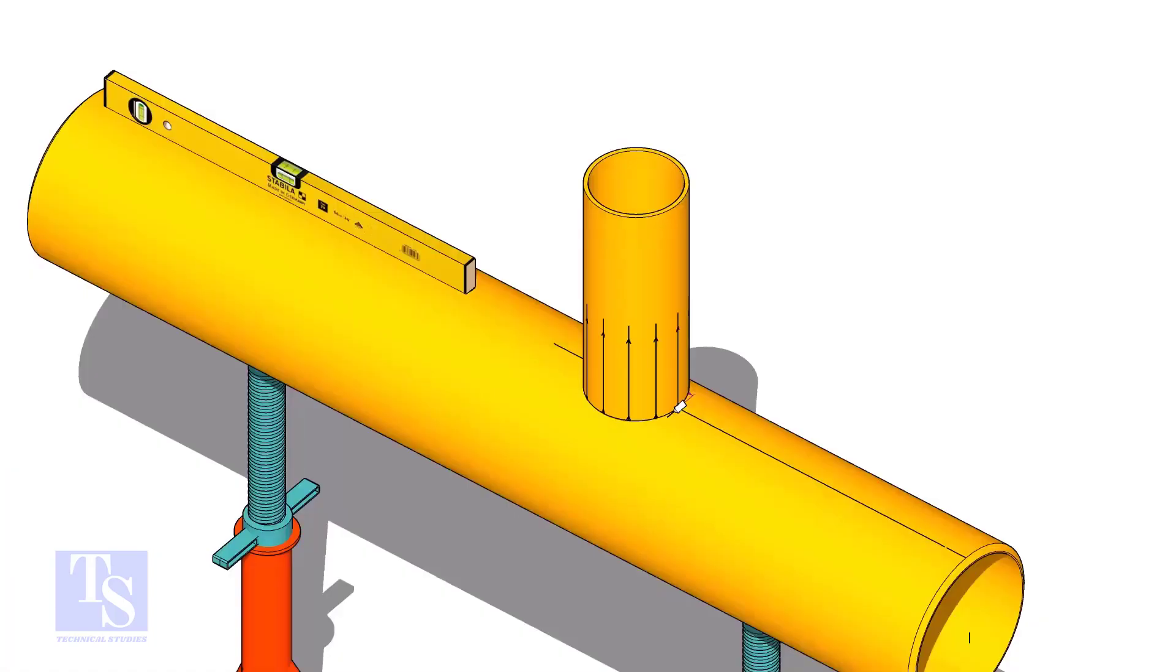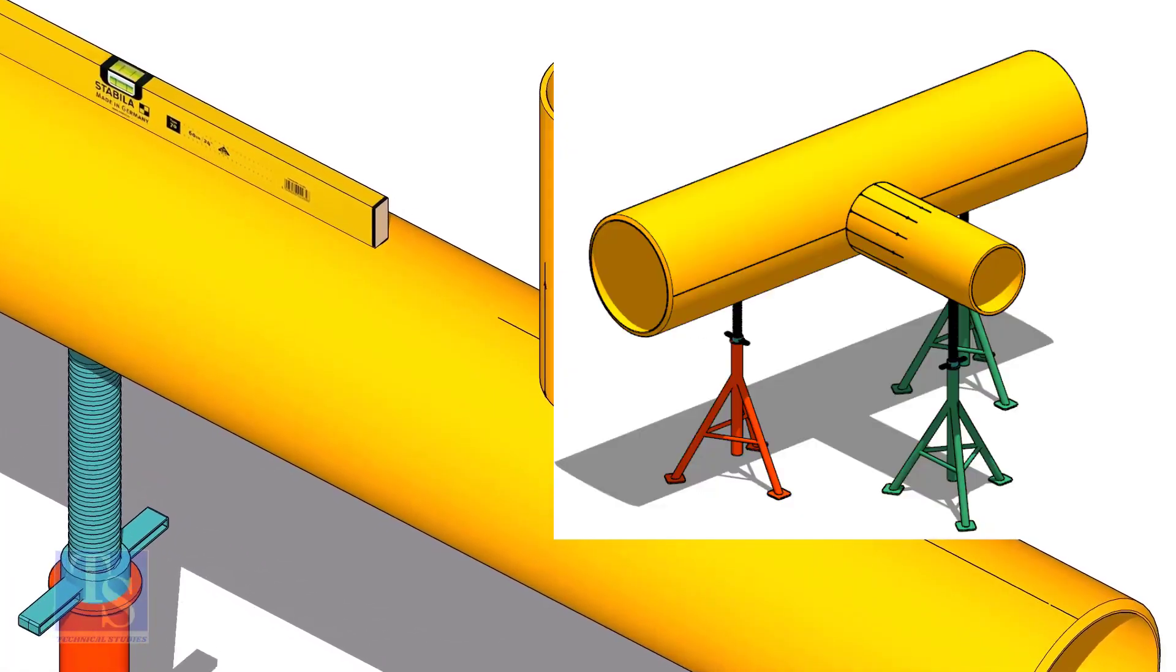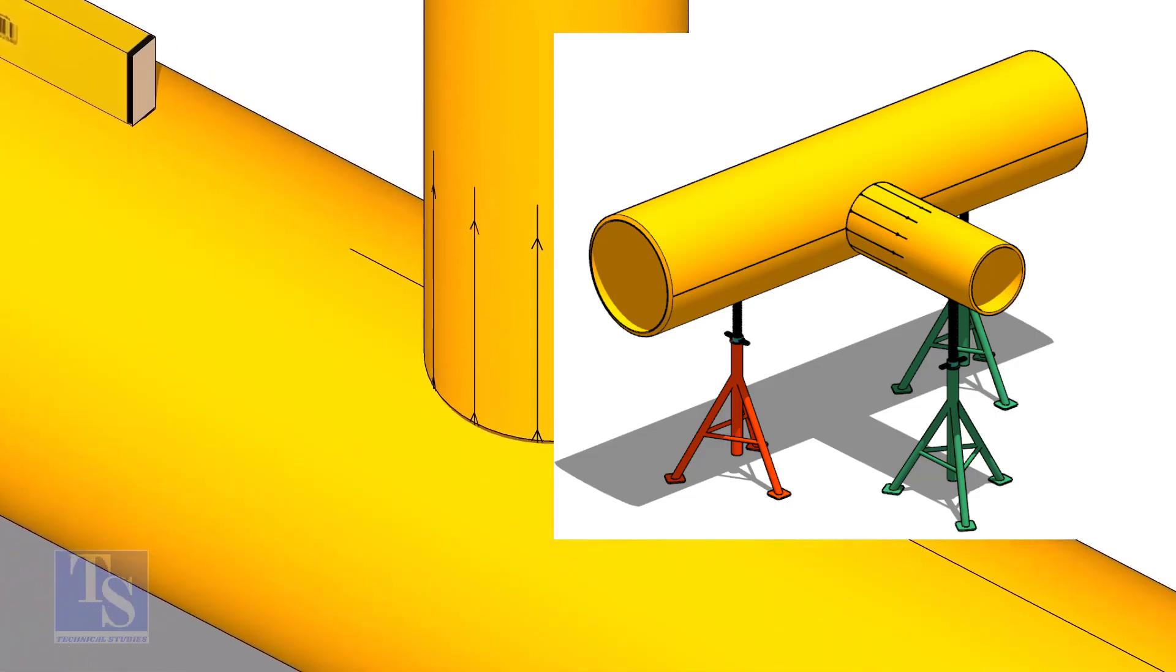Tack weld the branch on the header just to stand it vertically. If the pipes are large, you can do it in the horizontal position also.